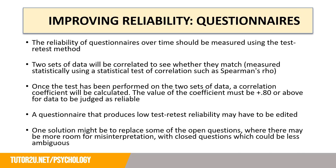In the previous slides, we've looked at how we might assess the reliability of something — test-retest and inter-observer reliability. For the next few slides, we're going to look at how we might improve reliability through different research methods. This is another common exam question: you might be given a stem within the research methods section, and then asked how could the researcher have improved the reliability of the study?